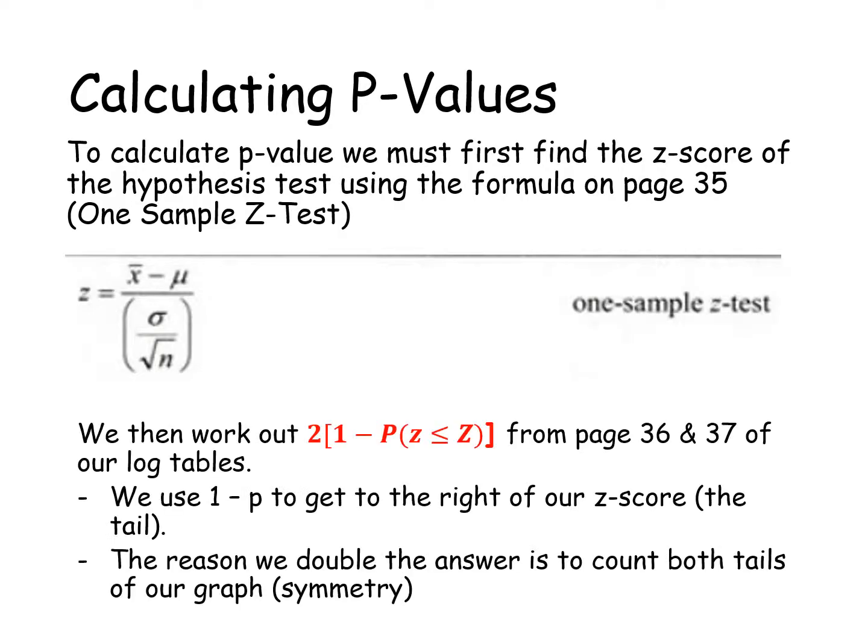Then we work from our tables and calculate two times one minus the probability that Z is less than or equal to the z we just worked out. From pages 36 and 37, our standard normal tables, we use one minus the probability to get the right tail, and multiply by two because we want both tails. Our rejection regions are plural—there's 2.5% in each tail, so to get 5% we double one tail. If that seems confusing, wait till you see the example.